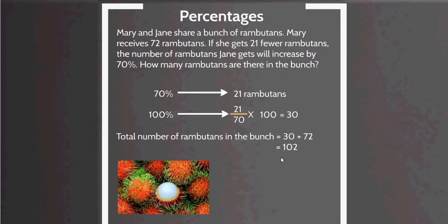From the question, we gather that 70% is equivalent to 21 rambutans, because it says that if Mary gets 21 fewer rambutans, then Jane's share will increase by 70%. So 70% is equivalent to 21 rambutans.